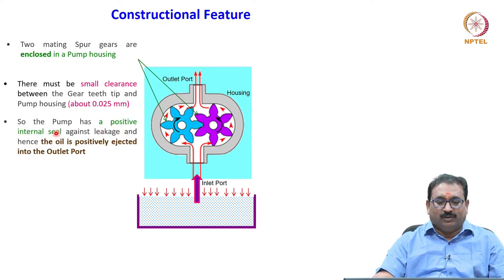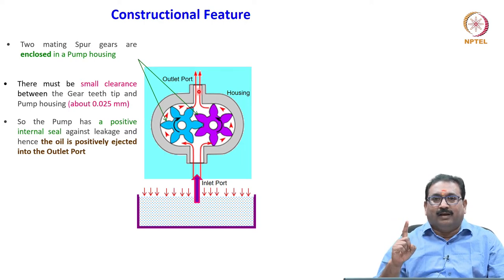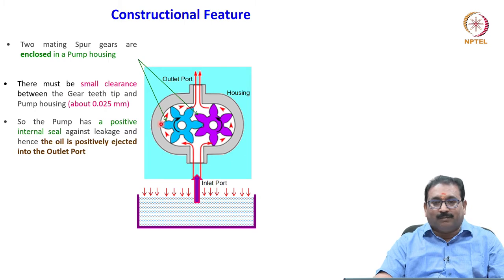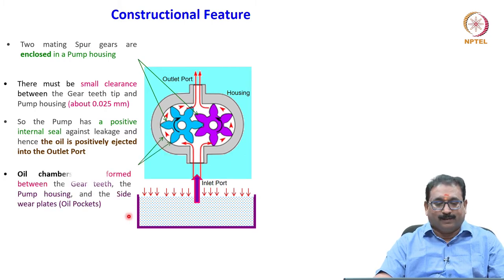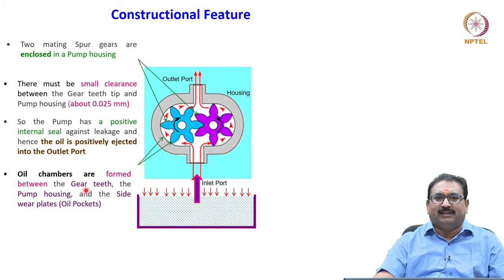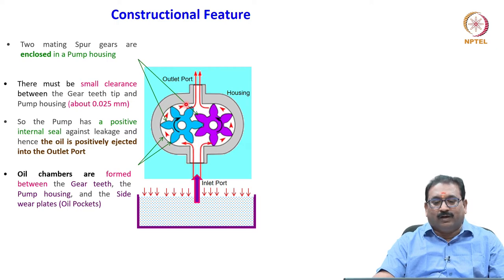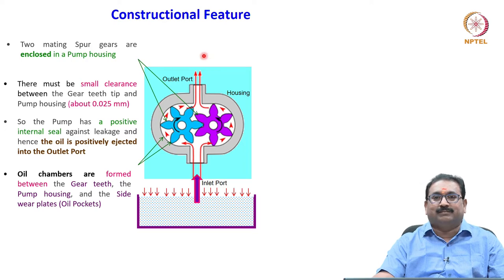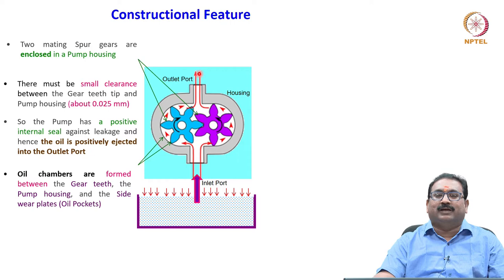The pump has a positive internal seal, hence the oil is positively ejected into the outlet. In hydrostatic pumps, the outlet and inlet are completely separated — only a small gap exists between them. Oil chambers are formed between the gear teeth, the pump housing, and the side wear plates — these are oil pockets. Once oil is caught here, it transports the fluid at the outlet along the periphery. Half revolution, oil is sucked; another half revolution, it is positively ejected because of the internal seals.